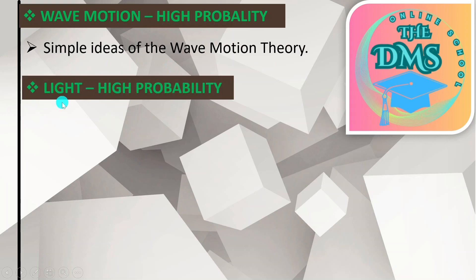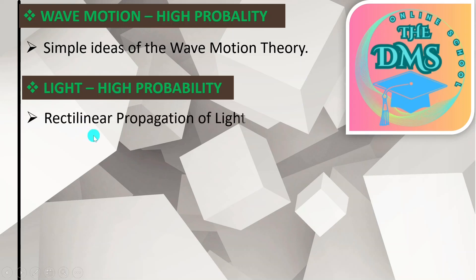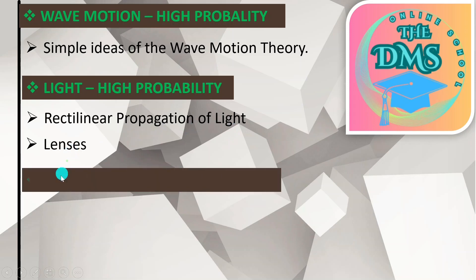Next, Light is also written in green with 'high probability.' Though light appeared in last year's exam and in this year's GCE exam, it still has a high probability of also being in the CSAS exam. Under light, what is expected is the rectilinear propagation of light, and also lenses. If questions come on light, they have to feature rectilinear propagation of light and lenses.